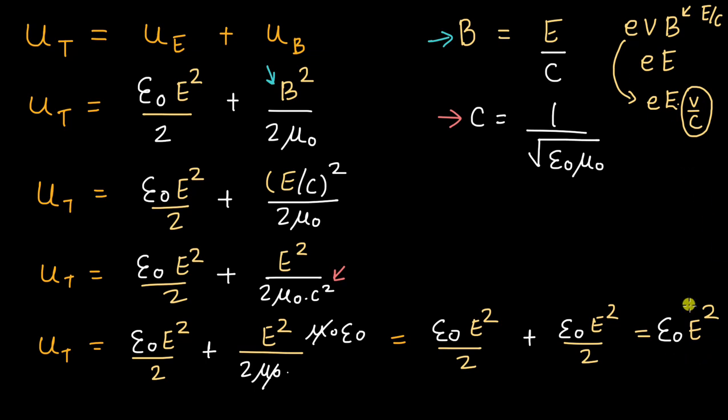In this video we derived an expression for the total energy density in an electromagnetic wave by considering the energy densities of the electric and magnetic fields, arriving at those by starting from familiar concepts — capacitors and inductors. Finally, we arrived at the interesting result that the energy densities due to the electric and magnetic fields are exactly the same.